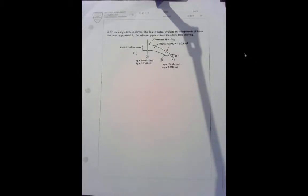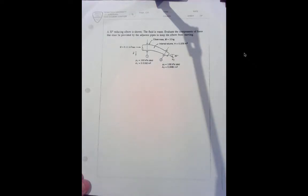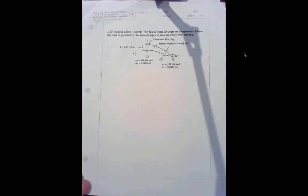Another example of the momentum balance applied in fluid mechanics. Here we have a 30 degree elbow. The diameter changes from the entry to the exit, so it's called a reducing elbow. The fluid of interest is water, and we want to evaluate the components of force that have to be provided by the adjoining pipes to keep the elbow from moving.